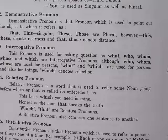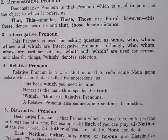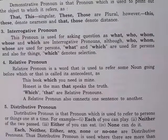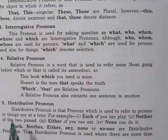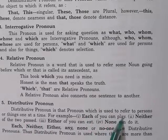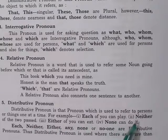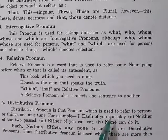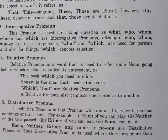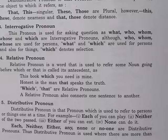The fifth one is distributive pronoun. Distributive pronoun is that pronoun which is used to refer to persons or things one at a time. For example: each of you can play, neither of the two passed, either of you can eat, none can do it. Each, neither, either, none, or any, no one are distributive pronouns.